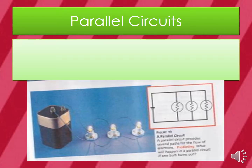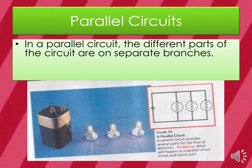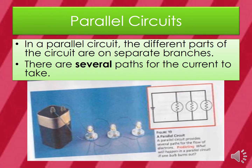In a parallel circuit, the different parts of the circuit are on separate branches, and there are several paths for the current to take. Looking at the diagram, one end of the battery is connected to one side of the first bulb, and that same side is also connected to the same side of the next bulb, and so on — creating two separate sides, or branches.